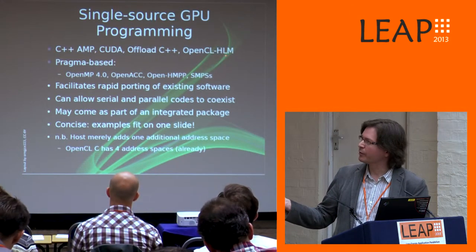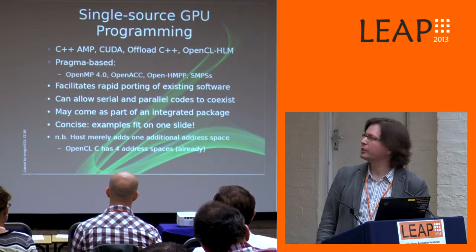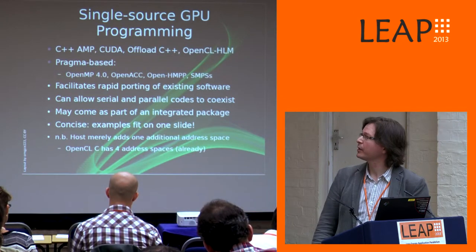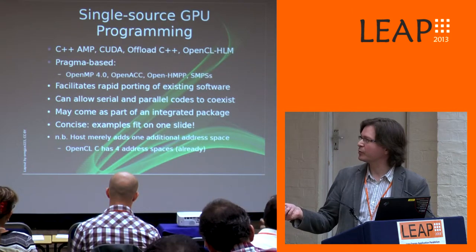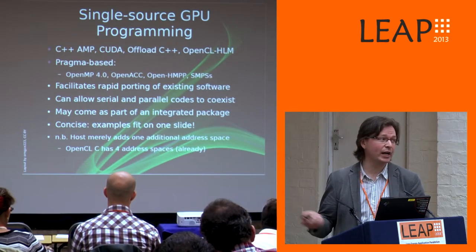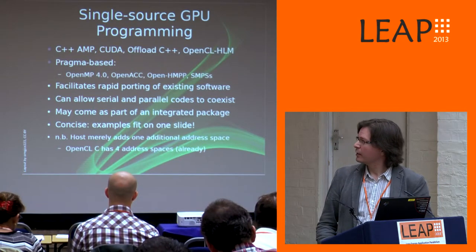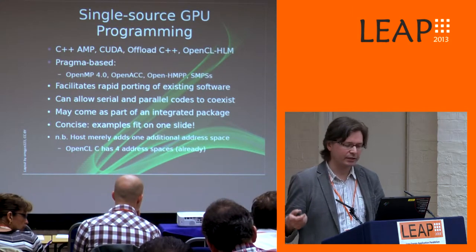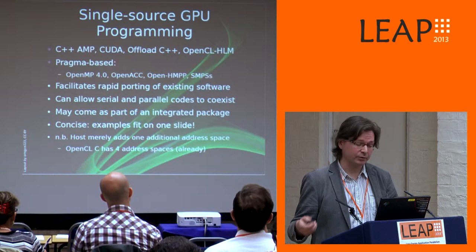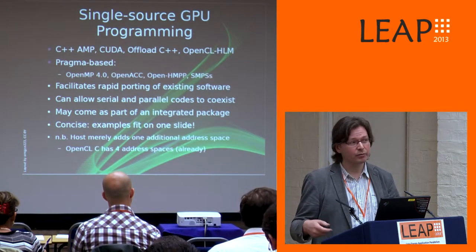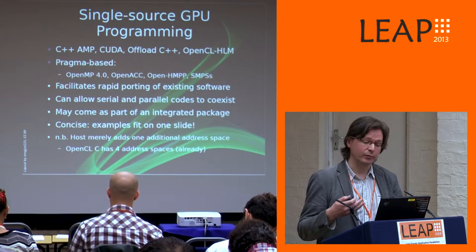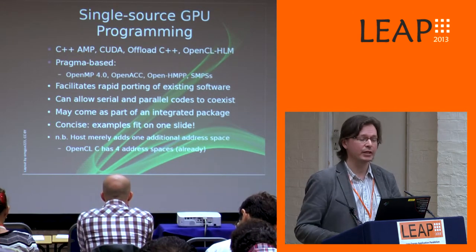There are quite a few single source solutions to choose from nowadays - C++ AMP, CUDA, our own offload C++, or the upcoming OpenCL HLM which should come out at the end of this year. You can also choose pragma-based solutions such as OpenMP, OpenACC, OpenHMPP, or Barcelona Supercomputing's SMP Superscaler. These have become quite popular - they facilitate rapid porting of existing software, and they can allow serial and parallel codes to coexist, which can help with debugging and initial development. Often these solutions come as part of an integrated package or IDE.